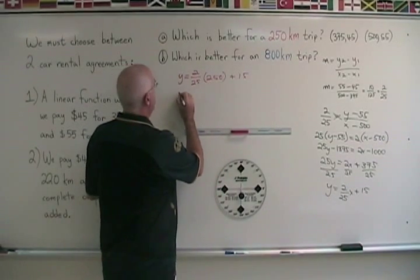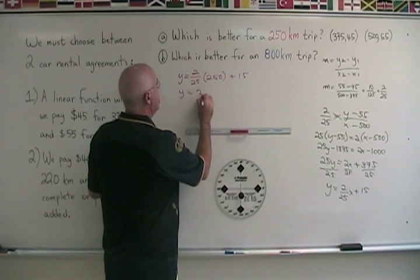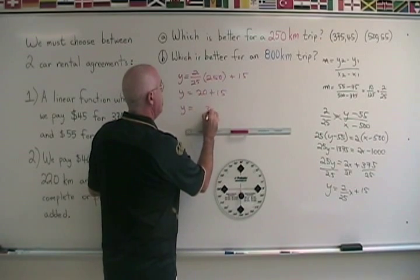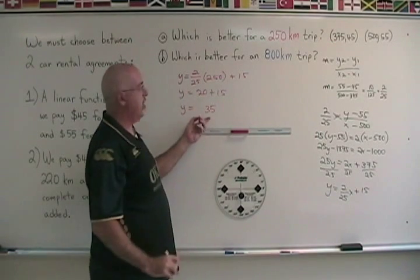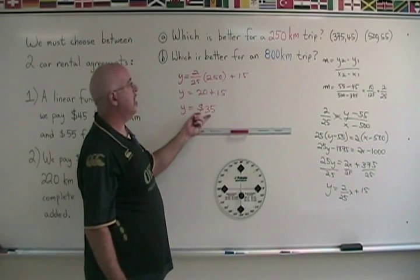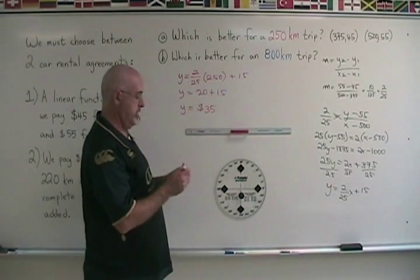We have substituted 250 for the x in the equation. We end up with y equals 20 plus 15, therefore y equals 35, and the unit of measure is dollars. So it would cost us $35 to use car rental agreement 1 for a 250 kilometer trip.